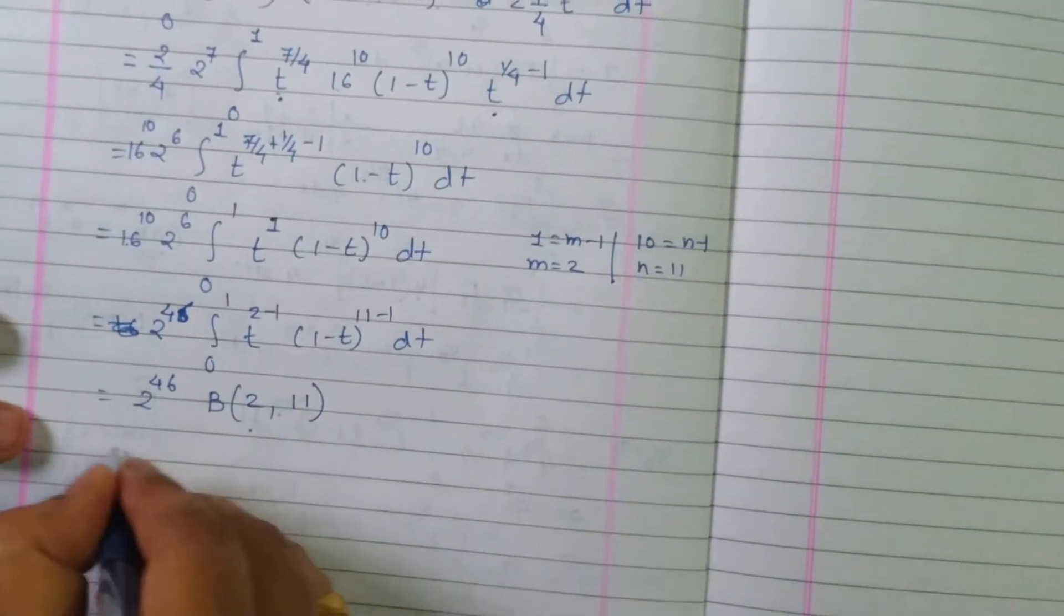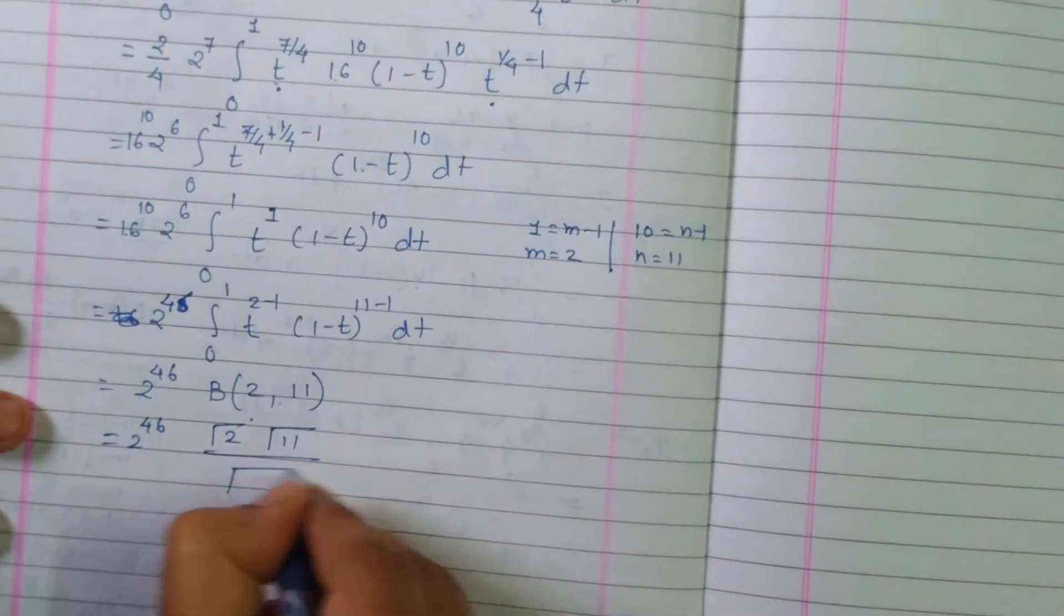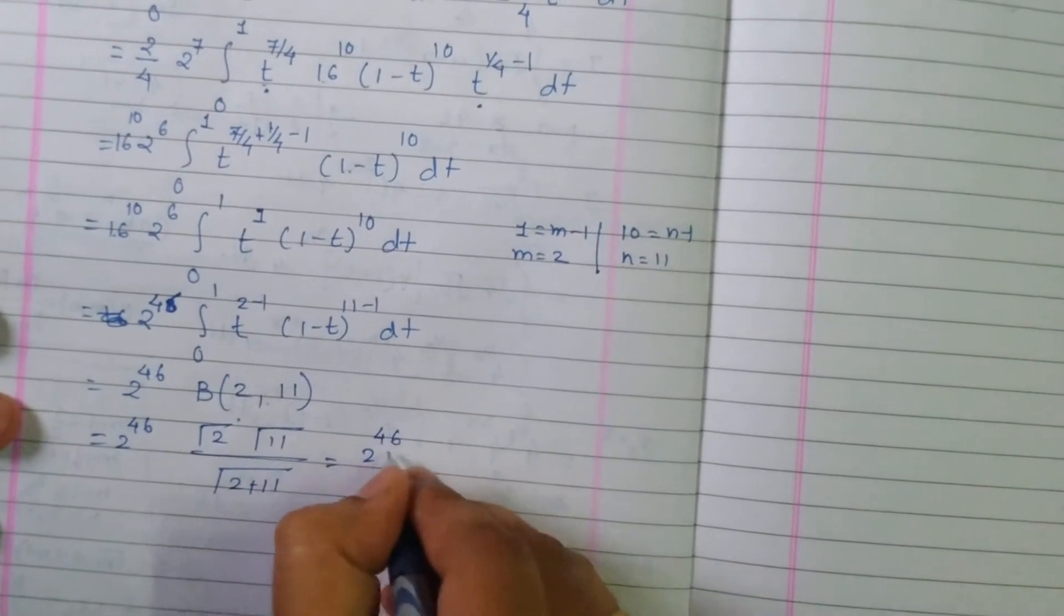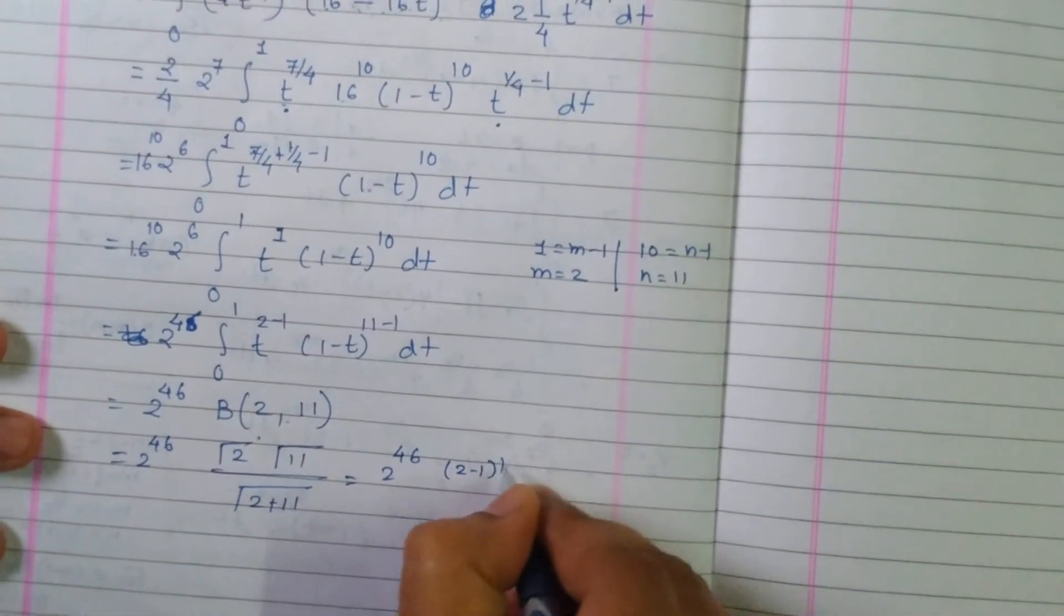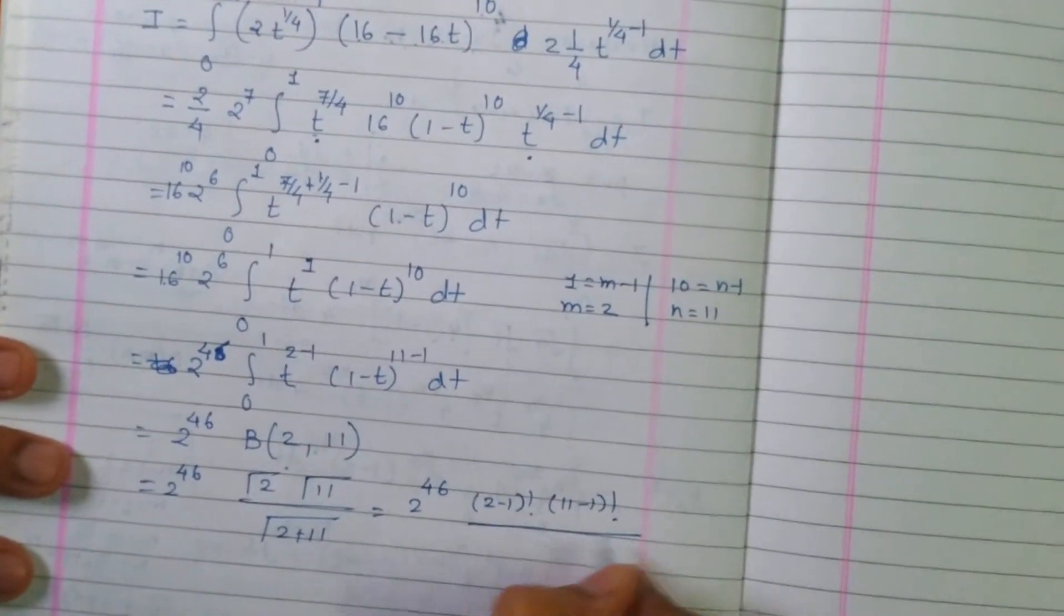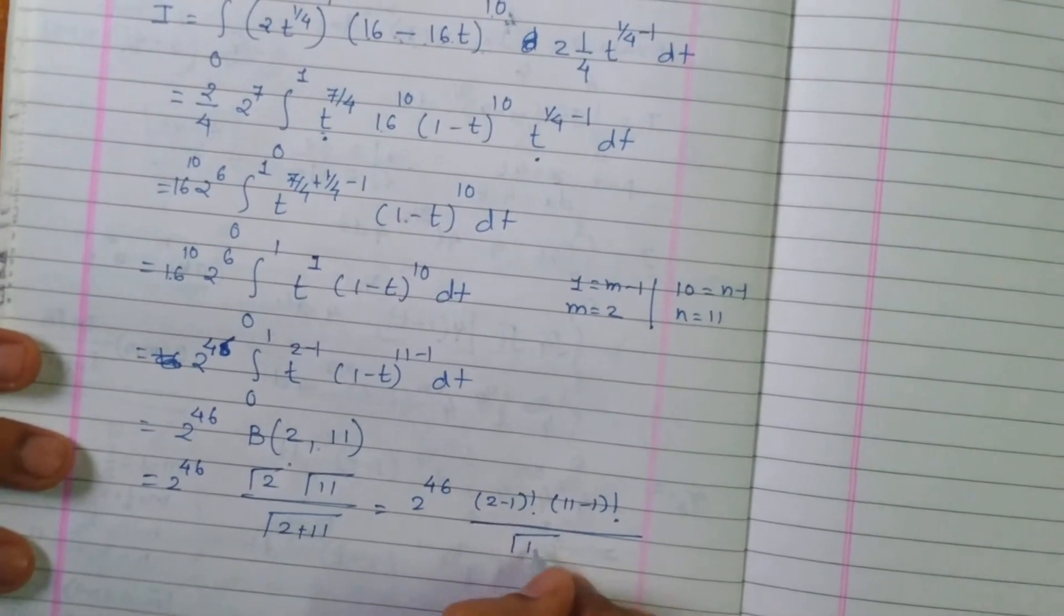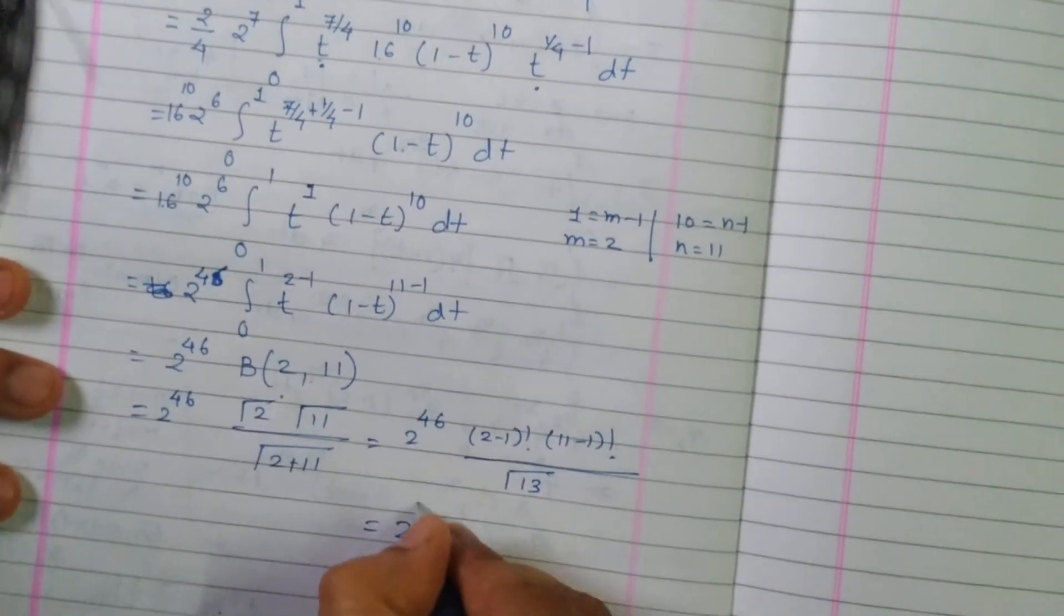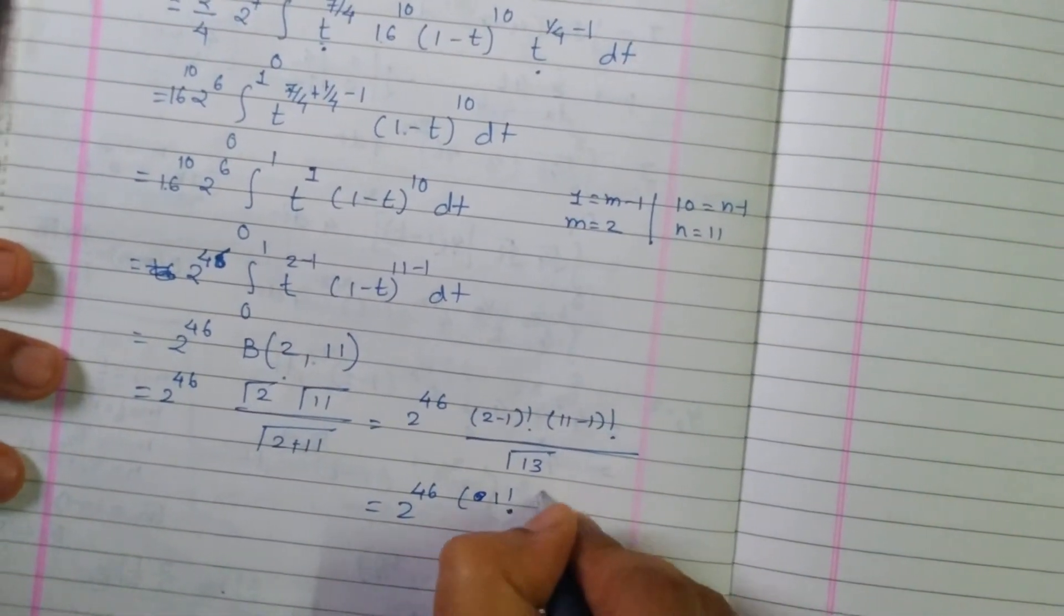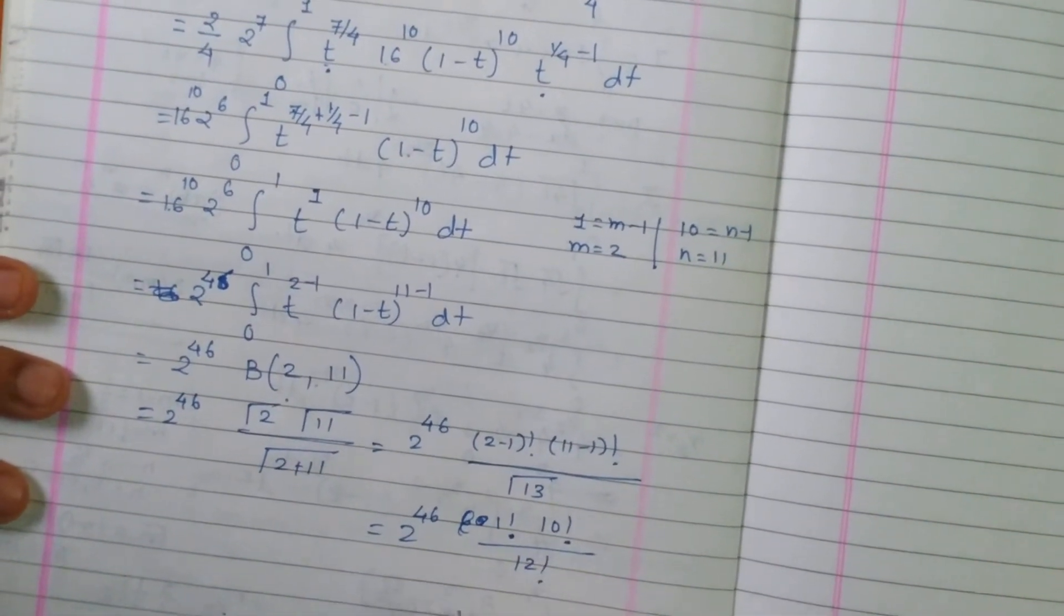Further you can simplify as 2 raised to 46 times gamma 2 times gamma 11 divided by gamma of 2 plus 11. That is 2 raised to 46 times gamma of 2, which is 1 factorial, times gamma of 11, which is 10 factorial, divided by gamma of 13, which is 12 factorial.